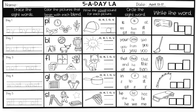Day three — so this would be Wednesday. What sight word are we tracing? N-O-T — not. Trace that in your best handwriting.